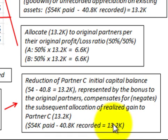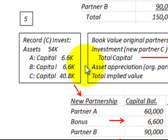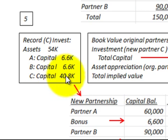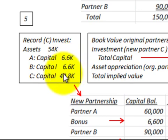Let's look at how we record this investment. Assets would be debited for $54,000. Capital for Partner A gets credited for $6,600 for the bonus, capital for Partner B gets credited for $6,600 for the bonus, and capital for Partner C gets credited for $40,800 for their capital investment upon admission into the partnership.